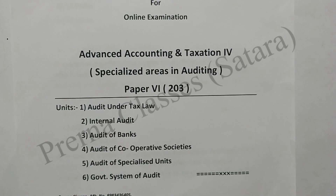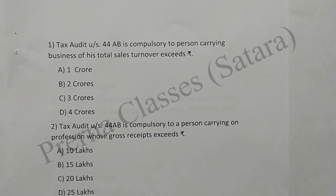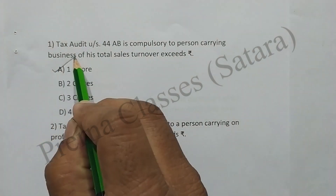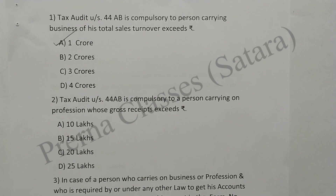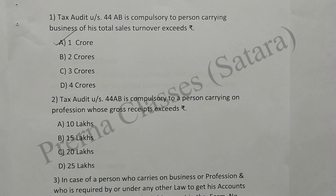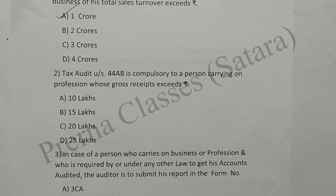Question 1: Tax audit under section 44AB is compulsory to a person carrying on business if his total sales turnover exceeds Rs. 1 crore. Answer: option A is correct. Question 2: Tax audit under section 44AB is compulsory to a person carrying on business or profession whose gross receipts exceed Rs. 25 lakhs. Here option D is correct.